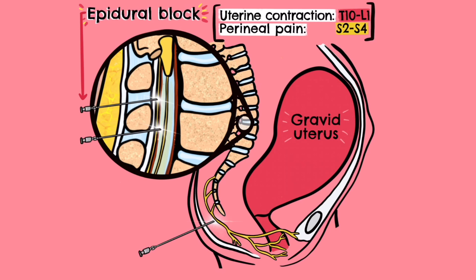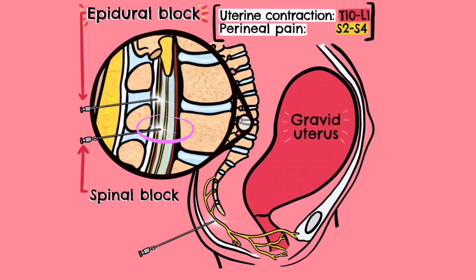Spinal anaesthesia, more commonly known as a spinal block, is a little different in practice to an epidural anaesthetic, however the key principle remains the same. Unlike the epidural procedure, the needle is placed past the dura mater into the subarachnoid space. To reach this space, the needle must pierce through several layers of tissue and ligaments, including the supraspinous ligaments, interspinous ligaments and ligamentum flavum. It is important to remember that because the spinal cord — specifically the conus medullaris — typically ends at the L1 or L2 level, the needle in the spinal block must be inserted below this, between either the L3-L4 or L4-L5 space, to avoid injury to the spinal cord.